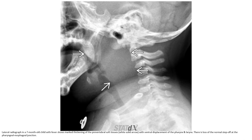This is another seven-month-old patient. There is marked widening of the prevertebral soft tissue. There is loss of the normal stepwise configuration at the cervical level. This is also a case of retropharyngeal space abscess.